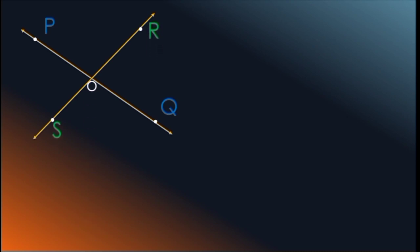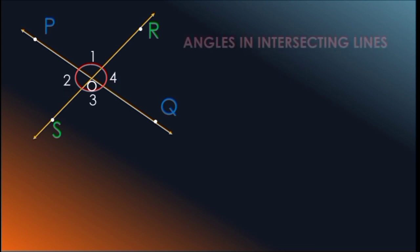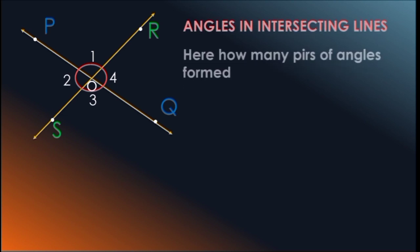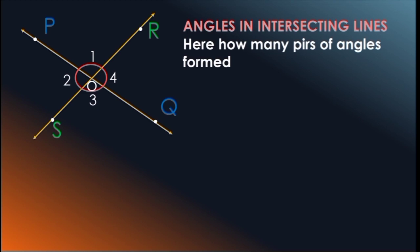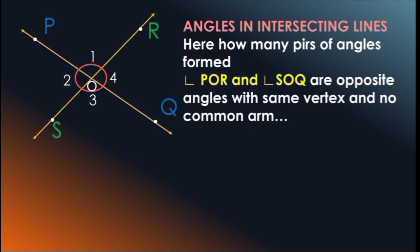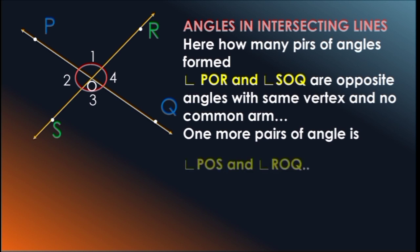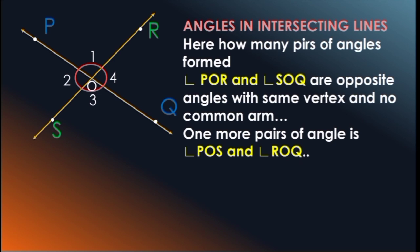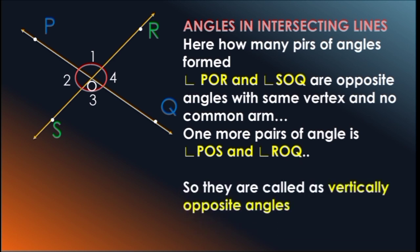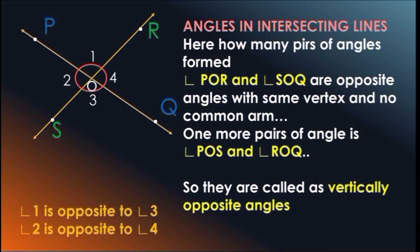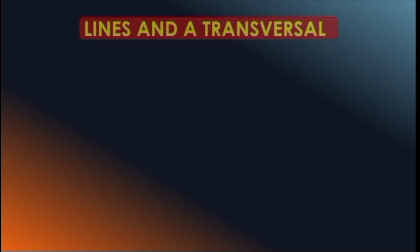Now look at one more figure. Here, PQ is a line and one more line SR is intersecting at O, making 4 angles: Angle 1, Angle 2, Angle 3, Angle 4. These are angles in intersecting lines. Angle POR and Angle SOQ are opposite angles with the same vertex and no common arm. One more pair is also there: Angle POS and Angle ROQ. These are called vertically opposite angles. So, Angle 1 is opposite to Angle 3 and Angle 2 is opposite to Angle 4.